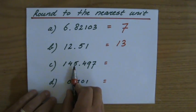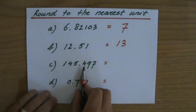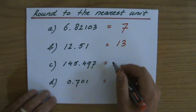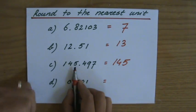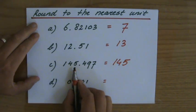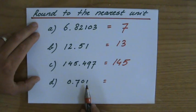My first decimal point is a four which is lower than five, so it's going to stay 145. Five stays five.